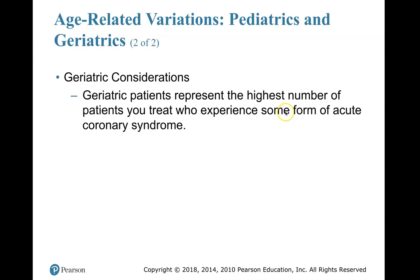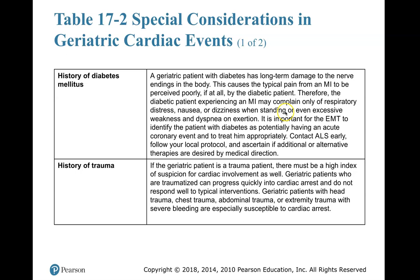Geriatric considerations: geriatric patients represent the highest number of patients who experience some form of acute coronary syndrome. Special considerations in geriatric cardiac events include history of diabetes mellitus, history of trauma, history of asthma, and history of COPD. Learn these tables.